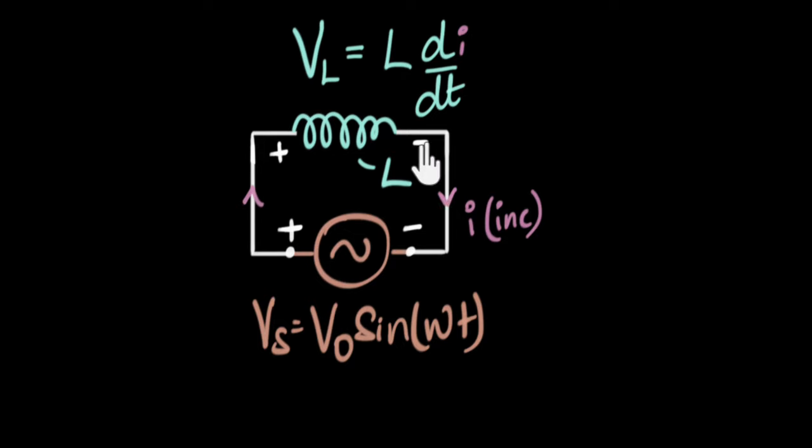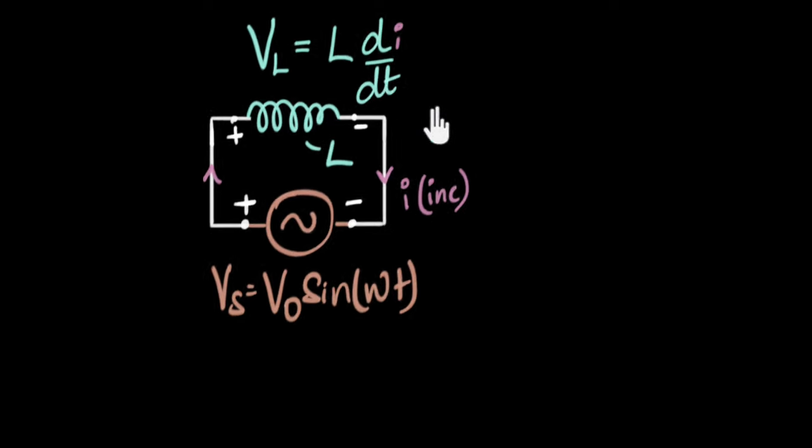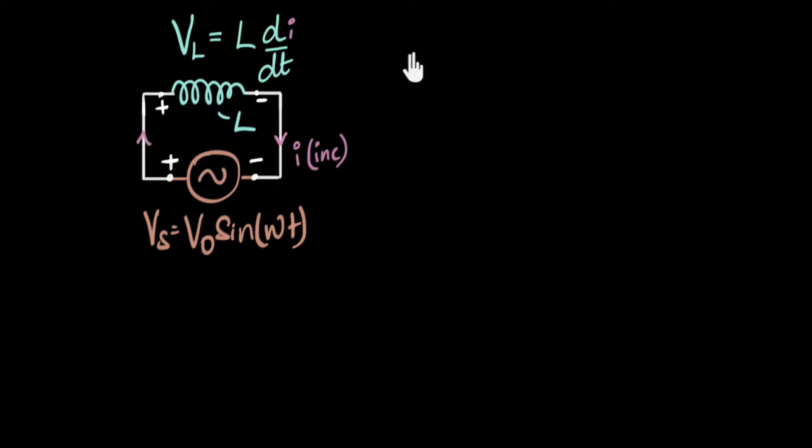And because there are no circuit elements in between, we know that this voltage in this point and this point is at the same potential, this point and this point is at the same potential. In other words, this voltage should exactly equal this voltage, both in magnitude and direction.